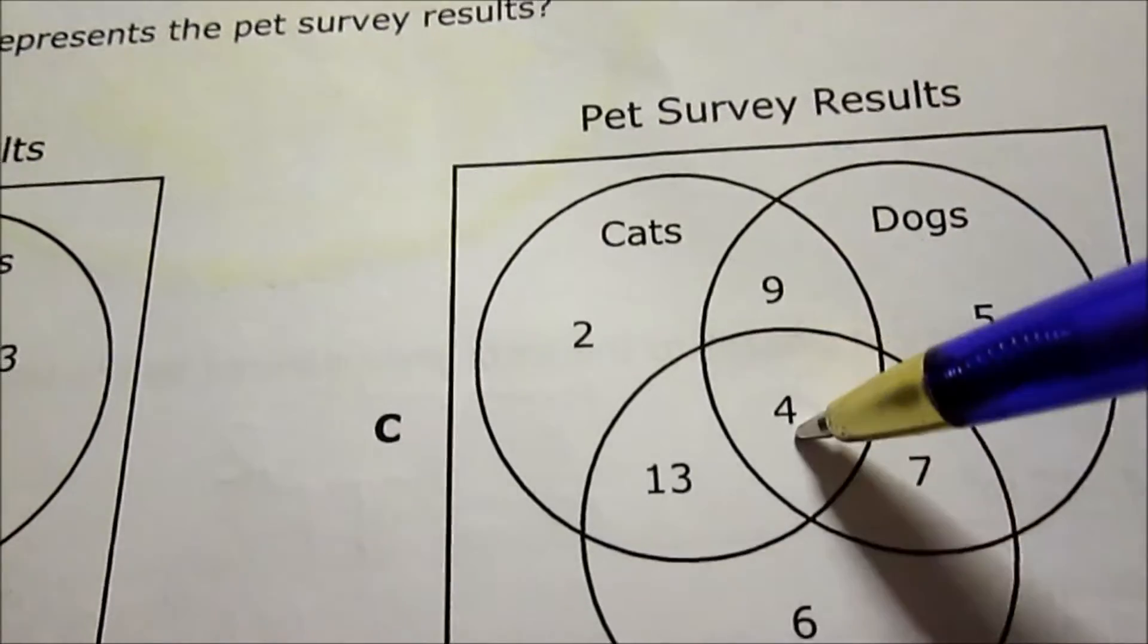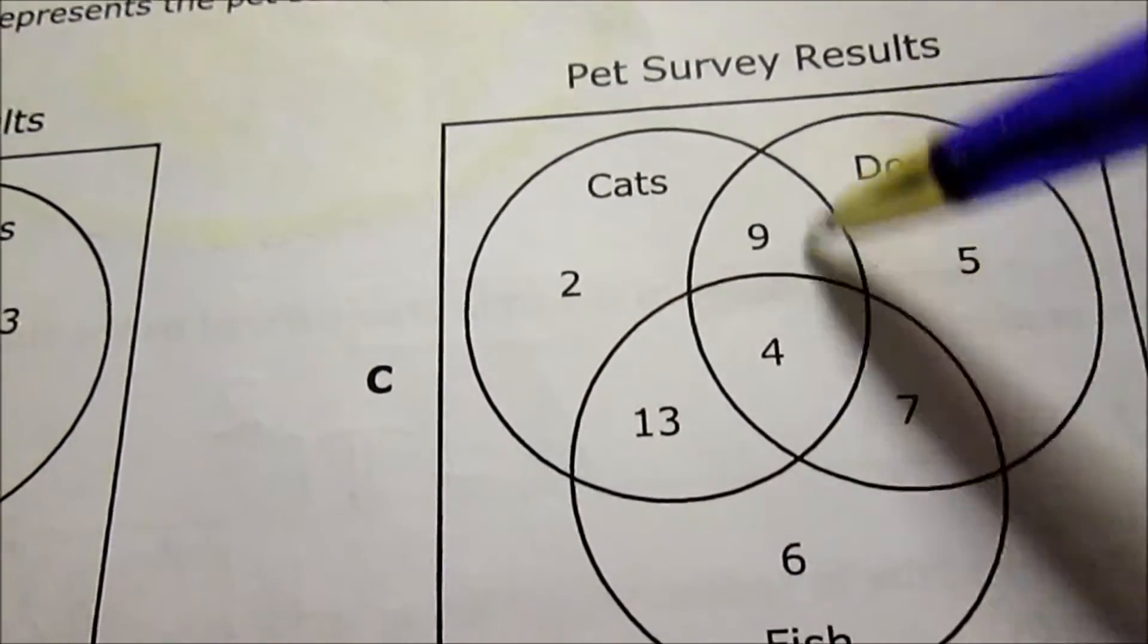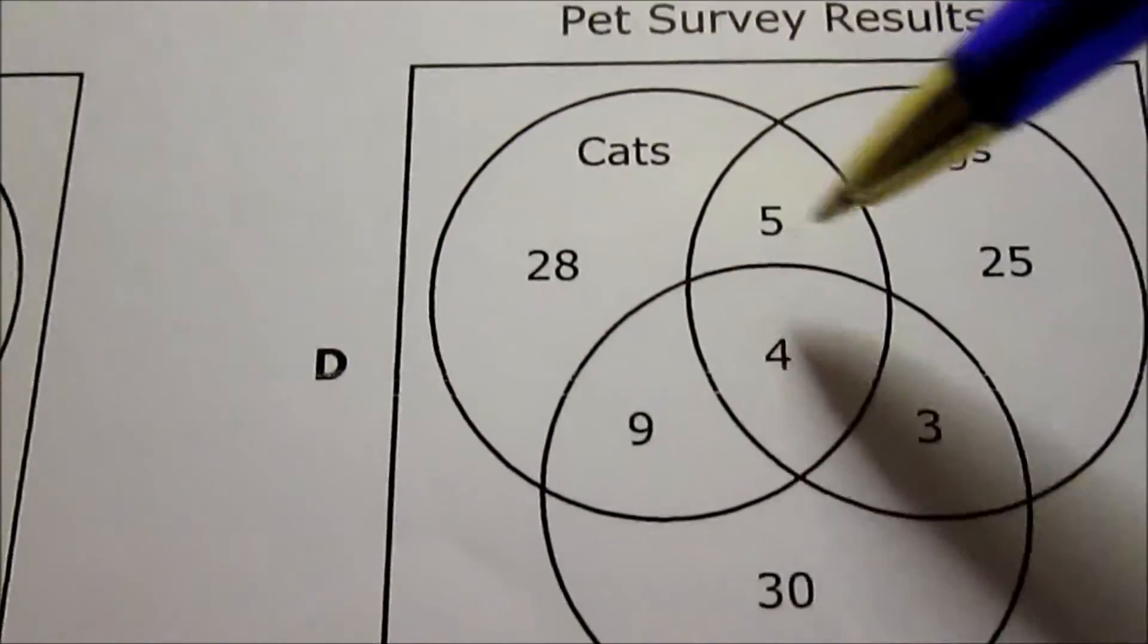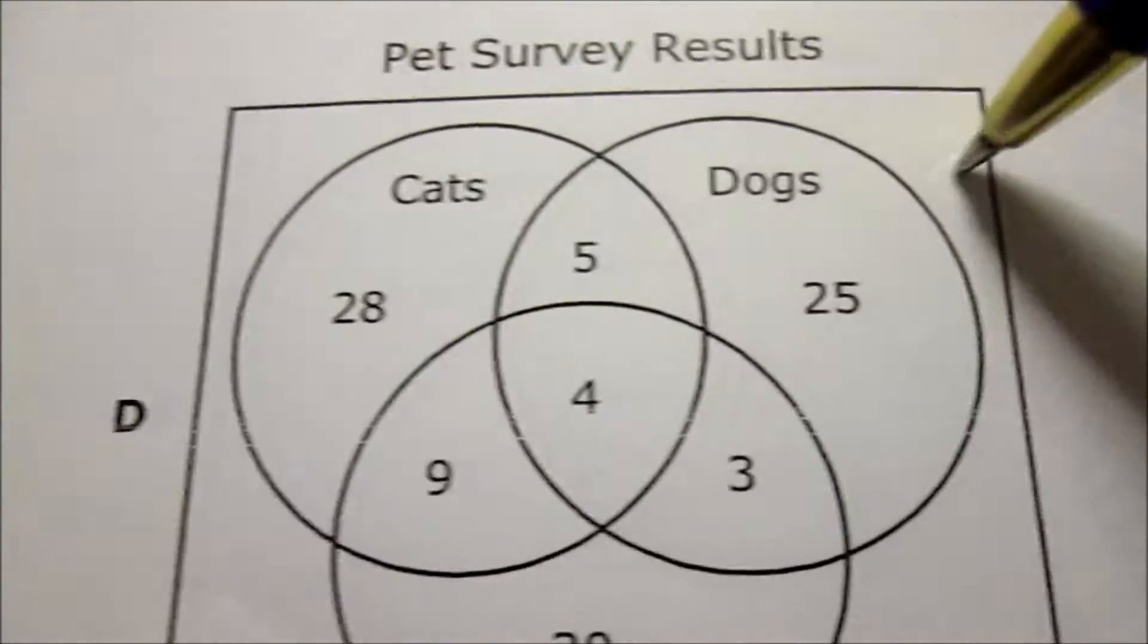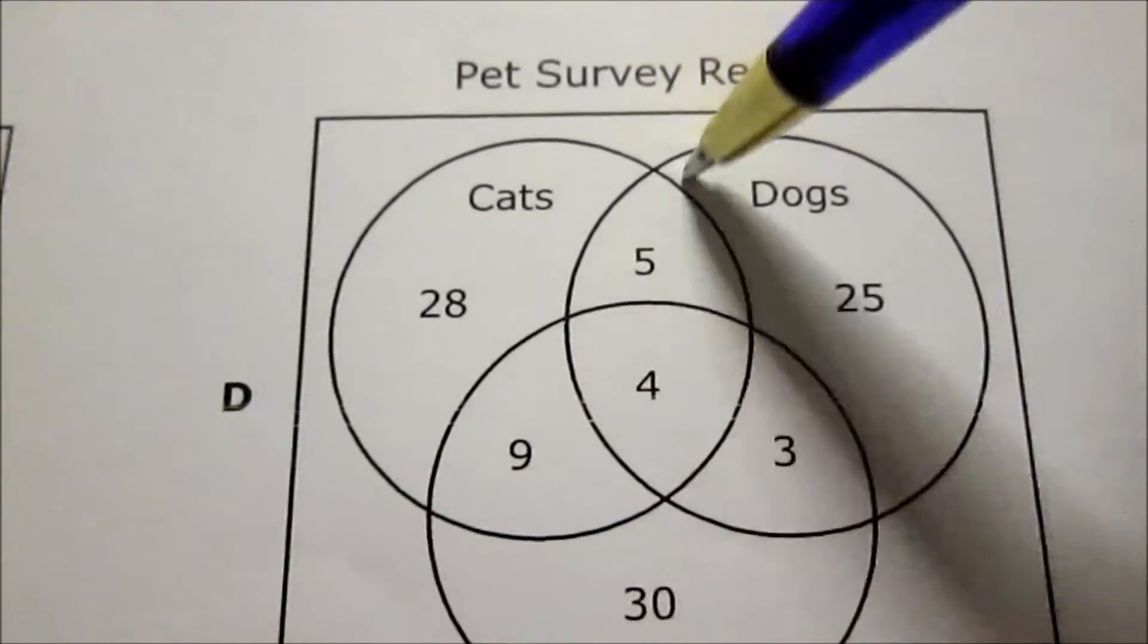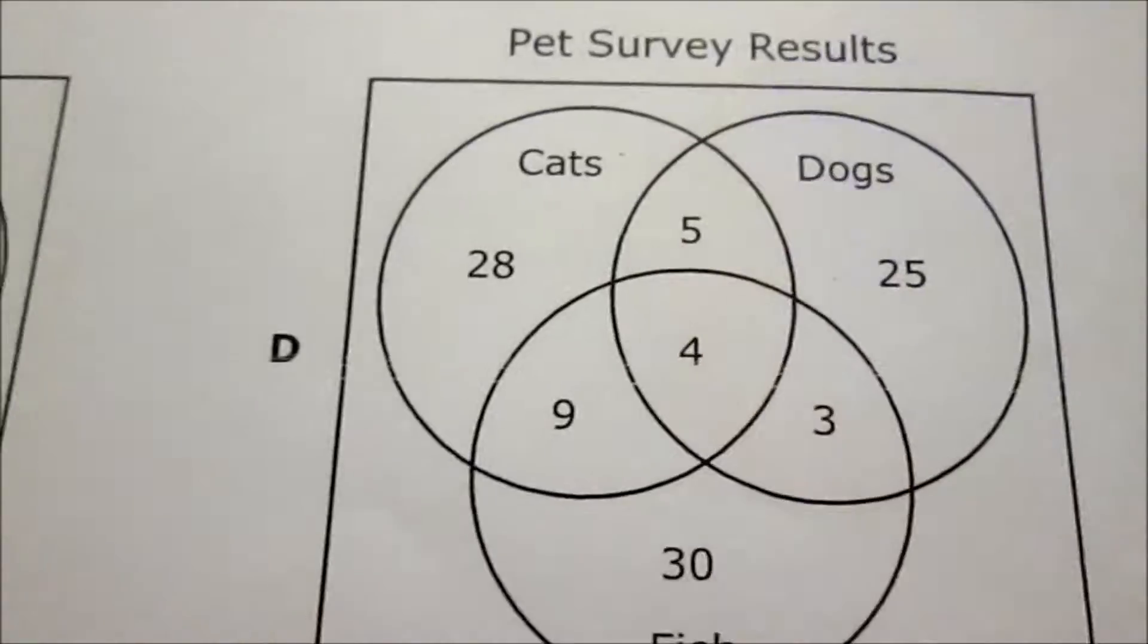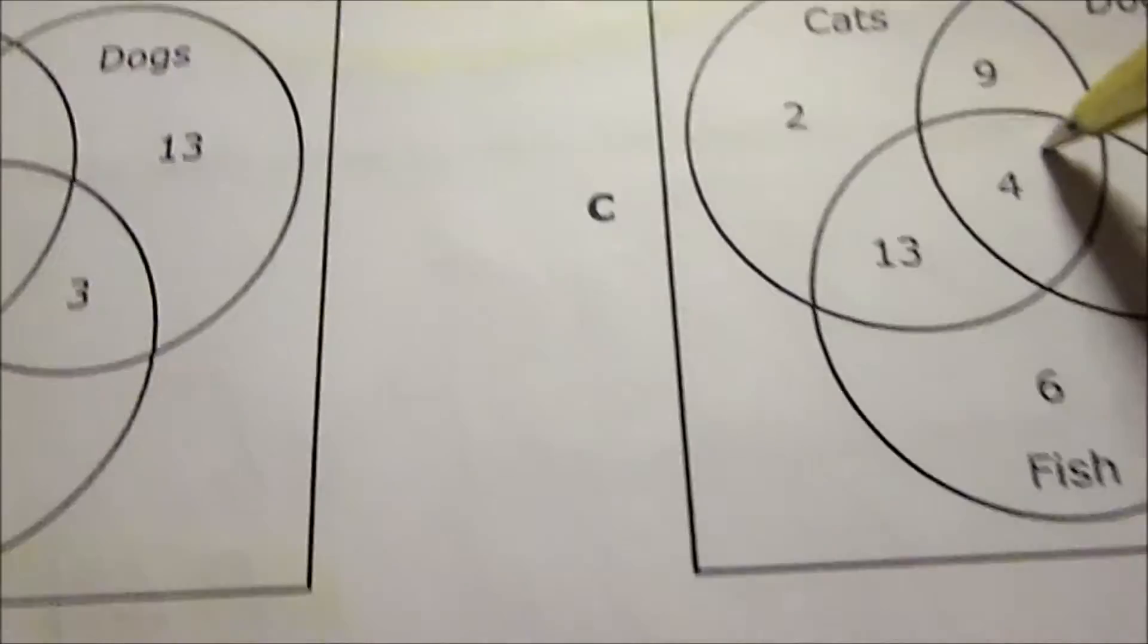What about C? 9 plus 4 is 13, plus 7 is 20, plus 5 is 25. This fits. D, again, same problem with B. 25 is already there and they have three more numbers, so that's definitely going to go over. It can't be D. So A and C are the remaining options.